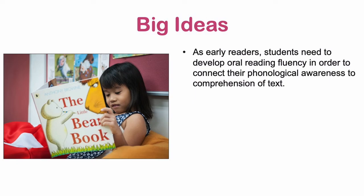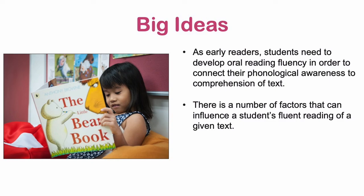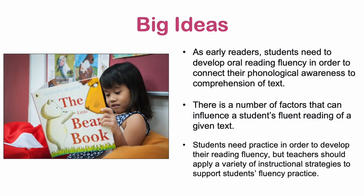The first big idea we need to talk about is that as early readers, students need to develop oral reading fluency in order to connect their phonological awareness to comprehension of text. Not all students will develop oral reading fluency at the same rate, and there are a number of factors that can influence a student's fluent reading of any given text. Just like with earlier literacy skills like letter knowledge, students need practice in order to become fluent readers, but teachers can and should apply a variety of instructional strategies to support students' fluency practice.